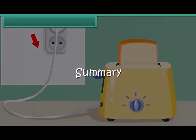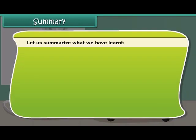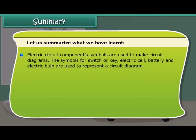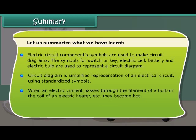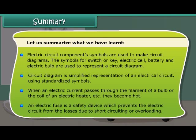Let us summarize what we have learned. Electric circuit component symbols are used to make circuit diagrams. The symbols for switch or key, electric cell, battery, and electric bulb are used to represent a circuit diagram. A circuit diagram is a simplified representation of an electrical circuit using standardized symbols. When an electric current passes through the filament of a bulb or the coil of an electrical heater, they become hot. An electric fuse is a safety device which prevents the electric circuit from losses due to short circuiting or overloading.